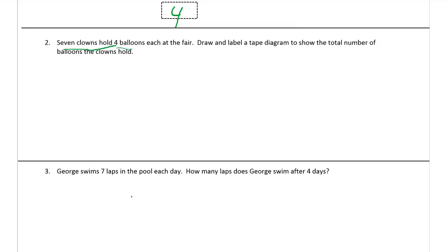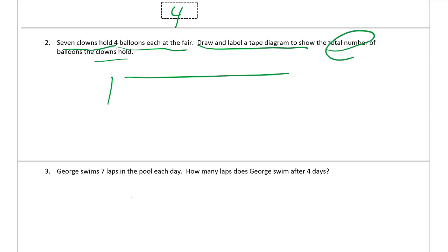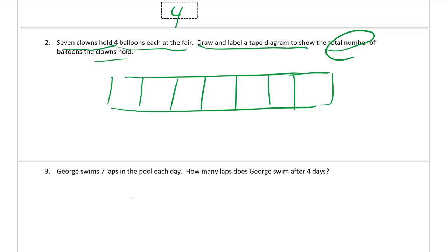Number two: seven clowns hold four balloons each at the fair. Draw and label a tape diagram to show the total number of balloons the clowns hold. We have seven clowns and four balloons each, but we don't know the total — that's what we need to find. So we need seven boxes in our tape diagram: one, two, three, four, five, six lines make seven boxes. Each box has four balloons.